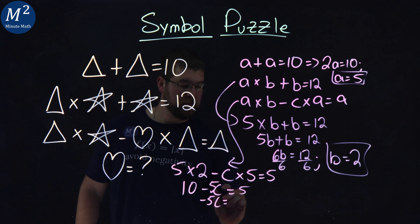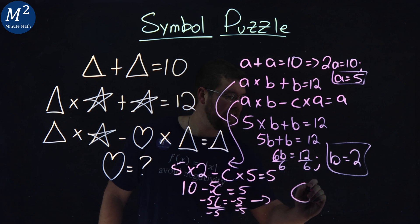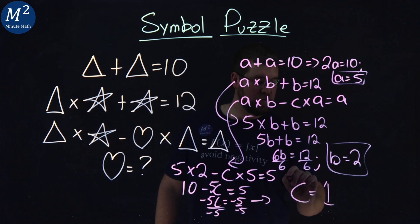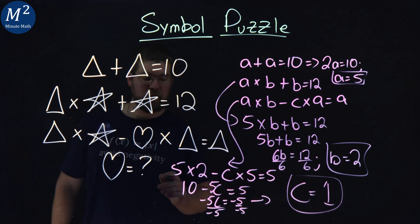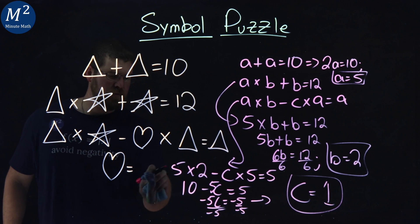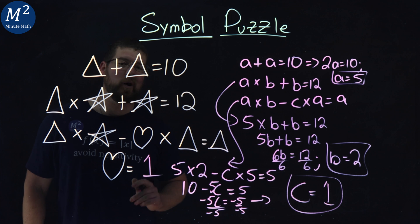Divide both sides by negative 5. C equals negative 5 over negative 5, which is positive 1. So our lovely heart, which is drawn perfectly, is 1.